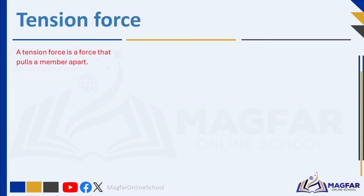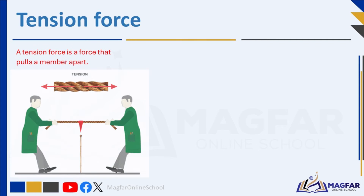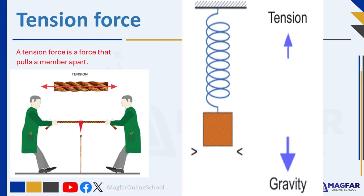A tension force is a force that pulls a member apart — the force that tends to stretch or elongate a material. The word tension comes from Latin, meaning to stretch. A force that is able to stretch or pull something apart is called a tensile force. Cables or ropes in a suspension bridge experience tension forces.